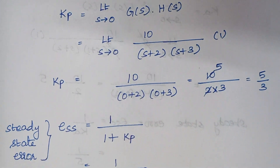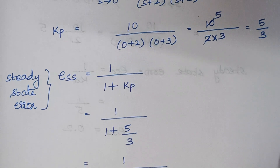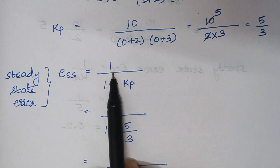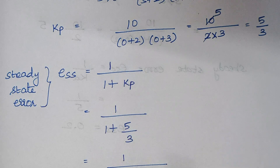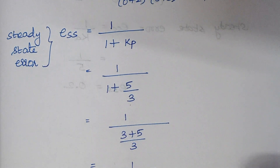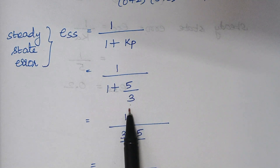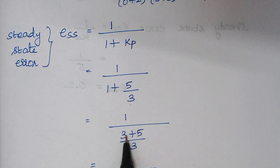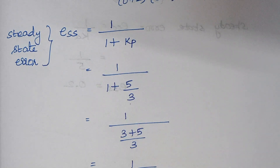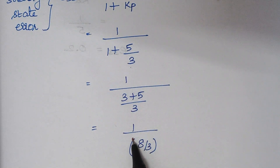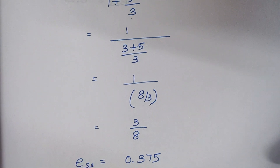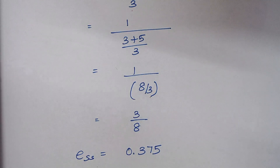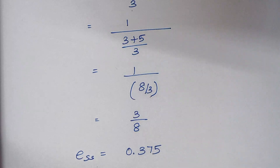Next we calculate the steady state error. ESS equals 1 divided by (1 + kp). Substituting kp equals 5/3: taking the LCM gives 1 times 3 equals 3 in the numerator, so 3 divided by (3+5), which is 3/8. The steady state error is therefore 0.375. This is the end of the second part.